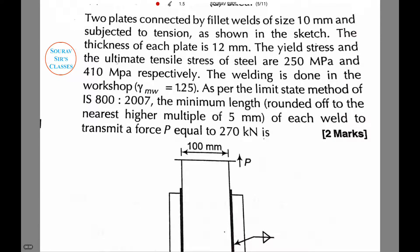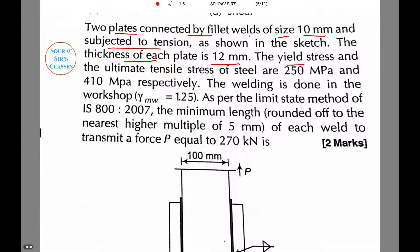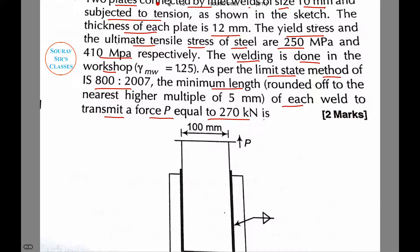Now let us read the question that is given to us. The question reads as: two plates connected by fillet welds of a given size and subjected to tension as shown in the sketch. The thickness of each plate is given. The yield stress and ultimate tensile stress of steel are given respectively. The welding is done in a workshop. As per the limit state method of IS code, find the minimum length of each weld to transmit a force P equal to 270 kN. We have been provided with four options.